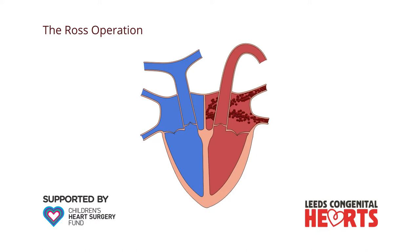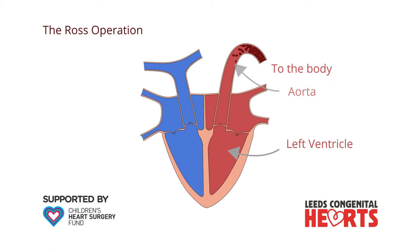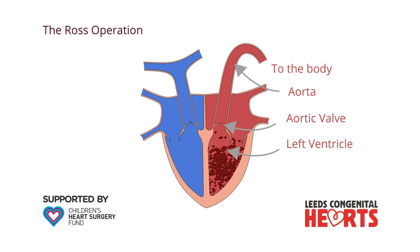On the left side of the heart, blood is pumped out of the left ventricle to the body via the aorta. The aortic valve opens to let the blood out and closes to prevent blood returning into the heart.